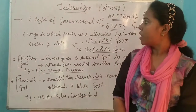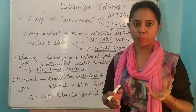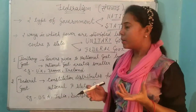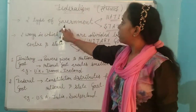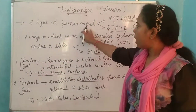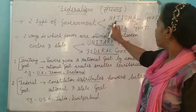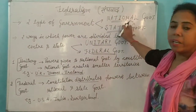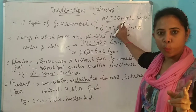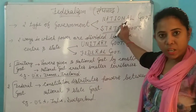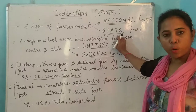Before this, we have to learn about some basic points. First of all, we have to know about two types of government. In each and every country, there are two types of government — one is national government and the second one is state government.